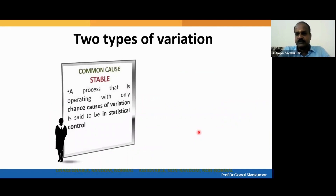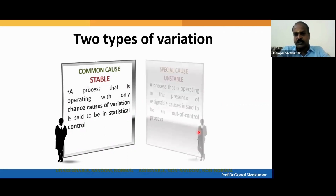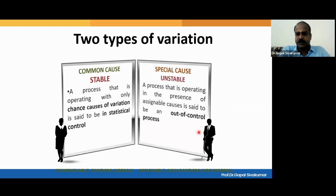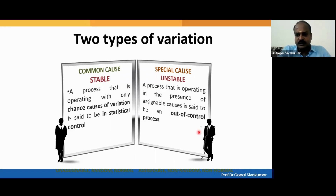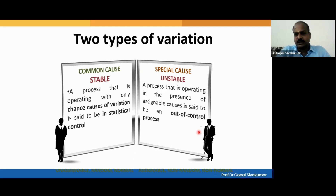Always in any control chart, there are two types of variation — the points are slightly moving away from the center line, and this is called variation. The variation can be classified into common cause variation or special cause variation. A process operating with only common cause of variation — also called chance cause or normal cause of variation — is said to be in statistical control. That means if you could see all the points inside the control limit, randomly distributed within the control limits, then you can consider the process to be in a state of statistical control.